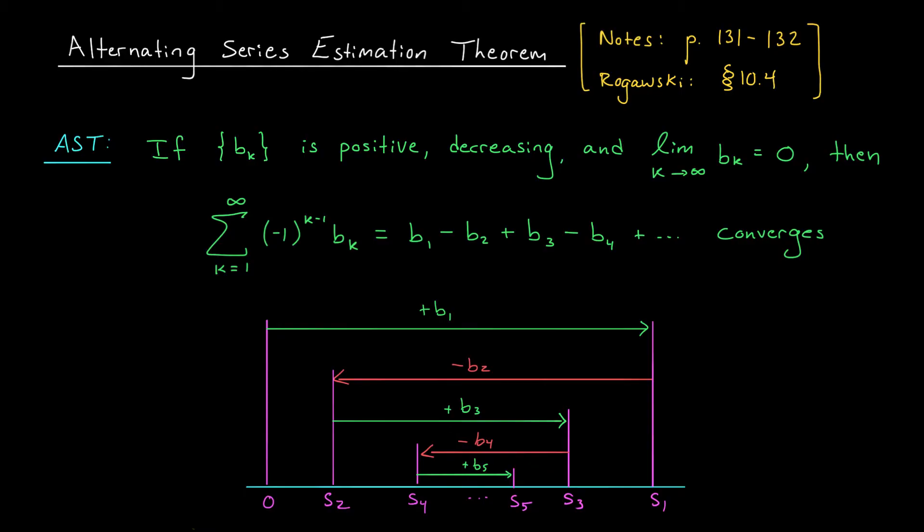So suppose that we want to add up the terms of this alternating series, b1 minus b2 plus b3 minus b4, and so on. Here these bk terms are just some positive numbers. If, in addition, they are decreasing and tend to 0, then the alternating series test says that this series will converge.